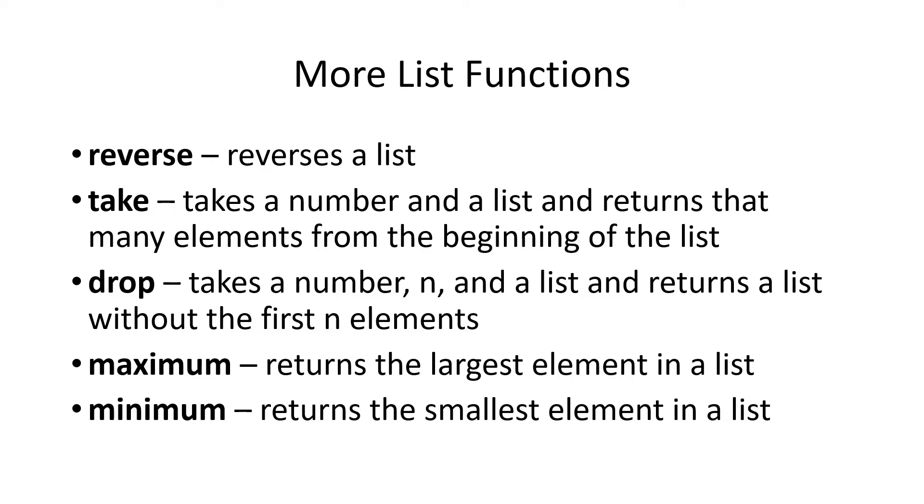The whole bunch of list functions that can also be used for strings because strings are a list of characters. Reverse, as you might expect, reverses a list. Puts it in reverse order. Take takes a number and a list and returns that many elements from the list. So you can return the first five elements from the list if you want to. Or you can delete the first five elements with drop.